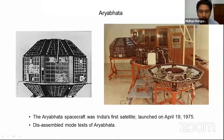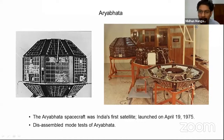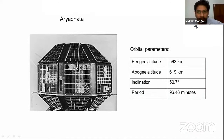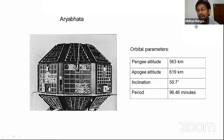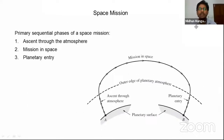Next is Aryabhata, India's first satellite, launched on April 19th, 1975 by ISRO. Its orbital parameters show a perigee altitude of 563 km and apogee altitude of 619 km — higher than Sputnik 1's 215 km perigee. Inclination is 50.7 degrees and the orbital period is approximately 96 minutes. These are crucial parameters when designing orbits for any spacecraft.